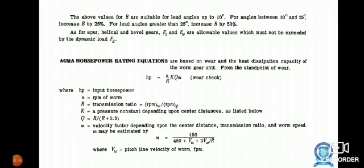The above values of β are suitable for lead angles up to 10 degrees. For angles between 10 to 25 degrees, increase by 25%. For lead angles greater than 25 degrees, increase by 50%. As per Keliger and Bubble gears, F_0 and F_W are allowable values which must not exceed the dynamic load F_D.